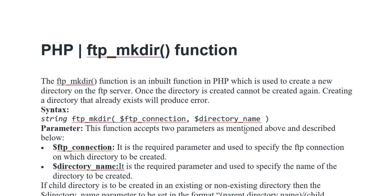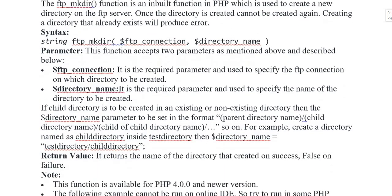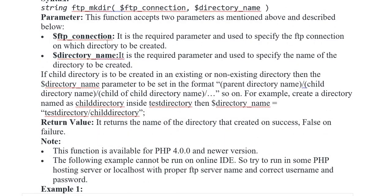This function accepts two parameters. The first one is ftp_connection — it is the required parameter used to specify the FTP connection on which the directory is to be created. The second one is directory_name — it is the required parameter used to specify the name of the directory to be created.